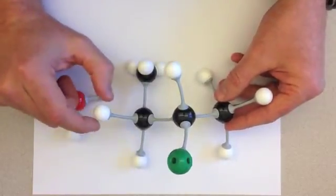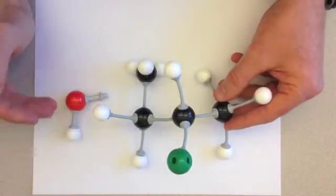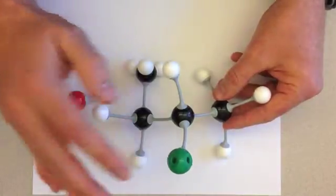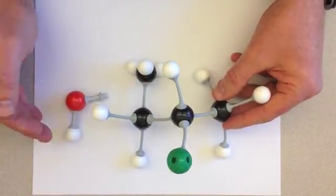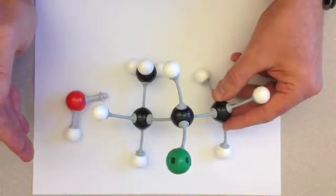When we think about elimination reactions, we form alkenes as the product. We don't substitute the leaving group. We just remove the leaving group and replace it with a double bond. And so let's see how that's going to happen for the E1 reaction.